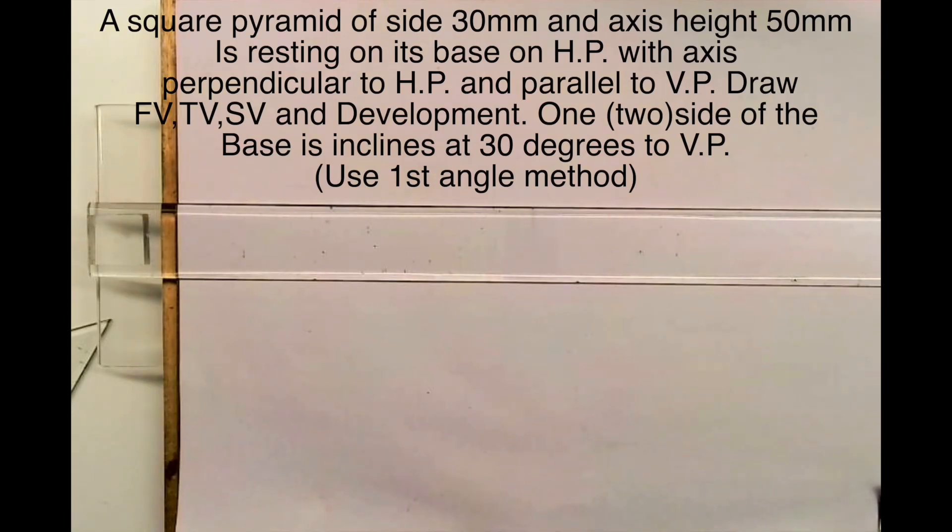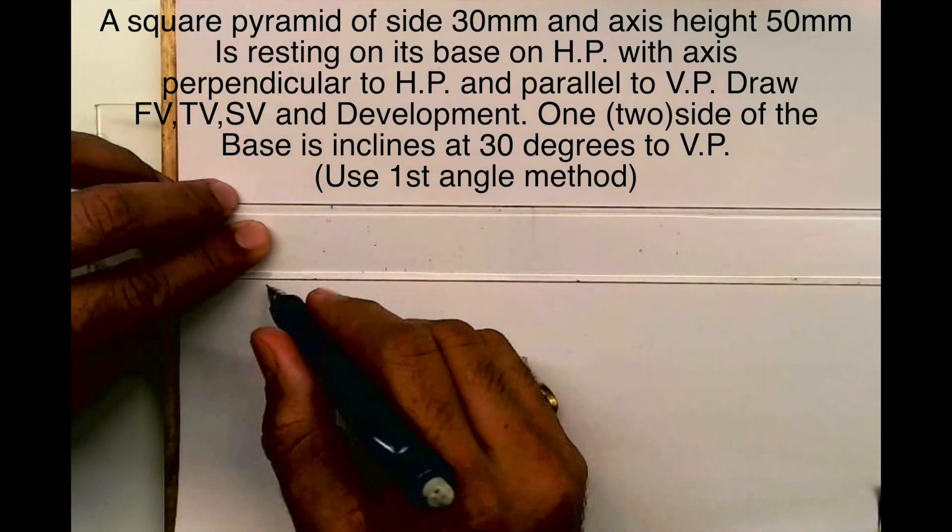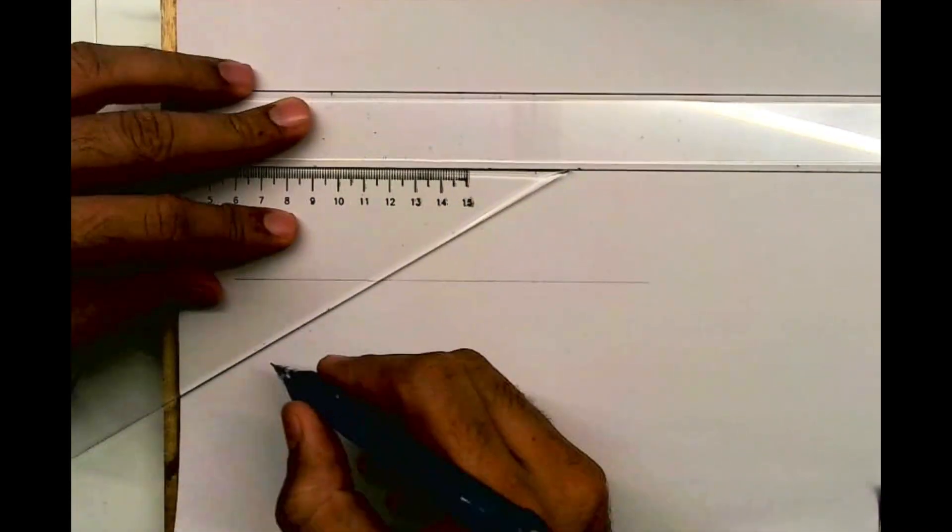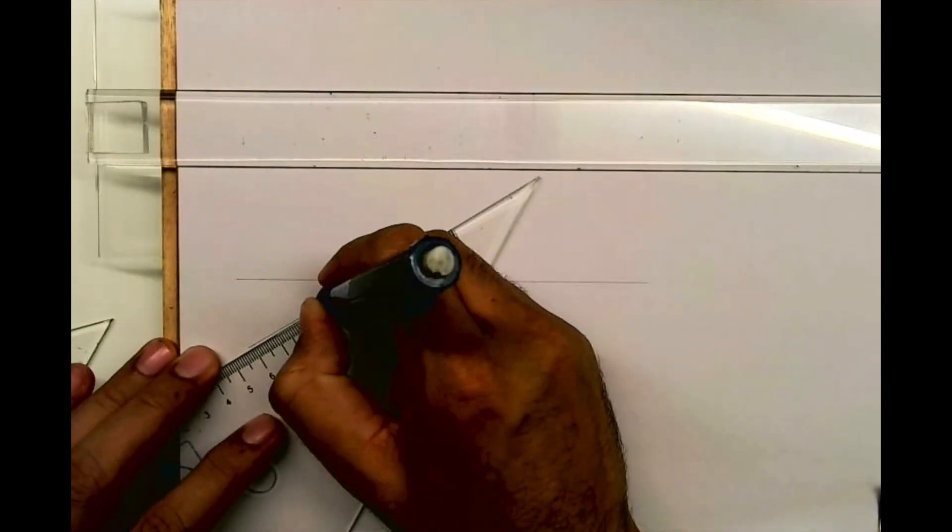A square pyramid of side 30mm and axis height 50mm is resting on its base on HP. Draw a front view, top view, and left-hand side view as well as development when one side of the base is inclined at 30 degrees to VP. Use first angle method. First, we will draw 30 degrees like this.